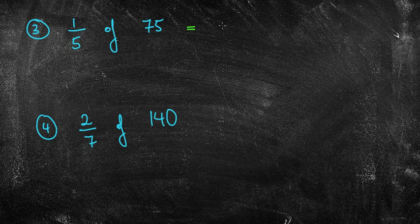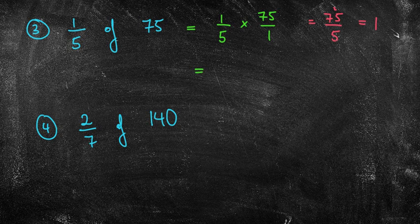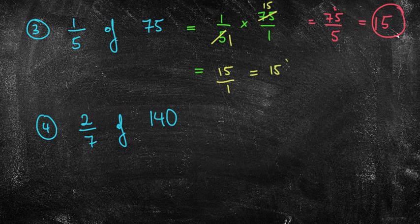So that first step, hopefully you've done this. 1 fifth of means times 75 over 1. Now again, if you want to just do times the tops and times the bottoms, that would come out to be 75 over 5. 5 goes into 7 once with 2 left over. 5 goes into 25 five times. So my answer is 15. However, you may have simplified early and said that 5 goes into 5 once. 5 goes into 75 fifteen times. Therefore, 1 times 15 is 15. 1 times 1 is 1. So my answer is just 15 there.